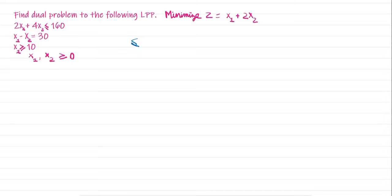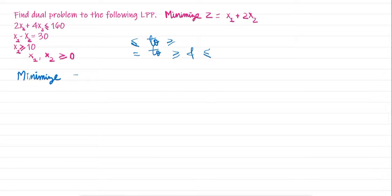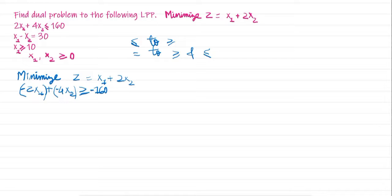First of all, we will convert the less-than-or-equal-to constraint to greater-than-or-equal-to, and the equality constraint will be converted to both greater-than-or-equal-to and less-than-or-equal-to. We convert this because it is a minimization problem. The rule is: we multiply both sides by minus 1. So it will become minus 2x1 minus 4x2 greater than or equal to minus 160.